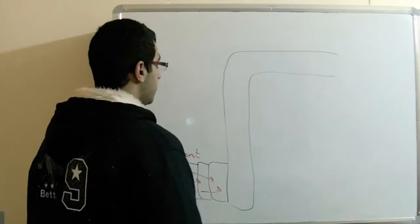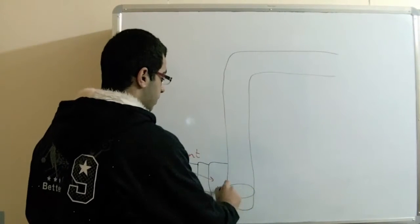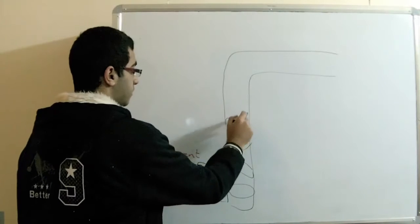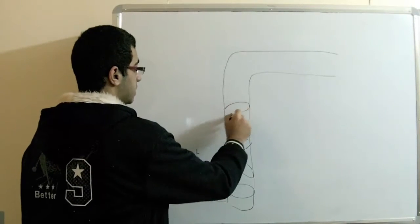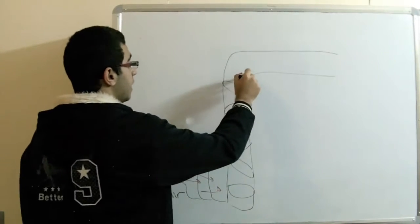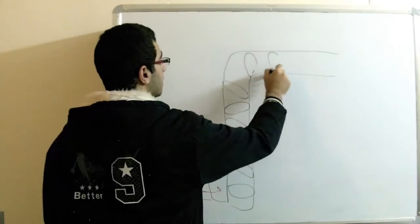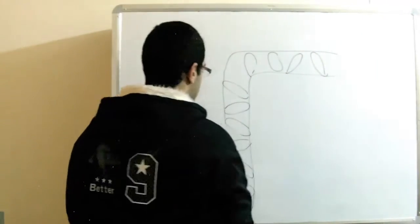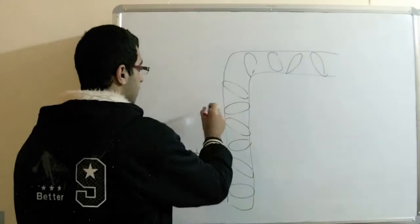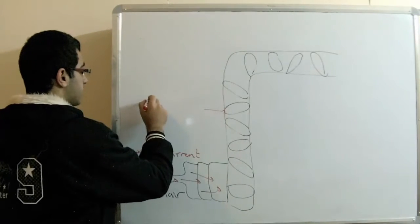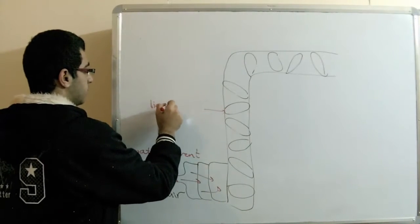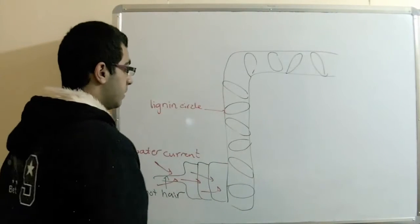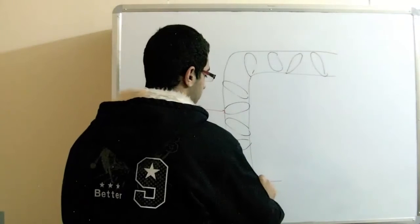As we have said also in the last time, the xylem is supported by lignin, which is deposited on the walls in different shapes, such as a spiral or an annular shape. So we can say that these are lignin rings that support the xylem vessel. This is the root xylem.